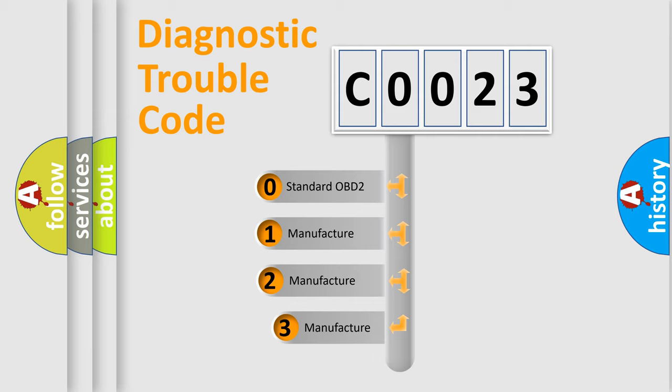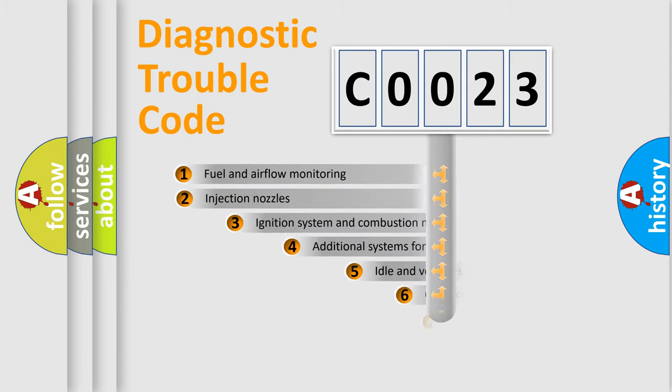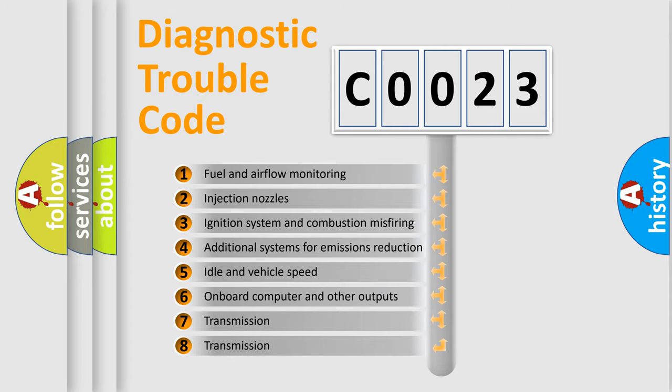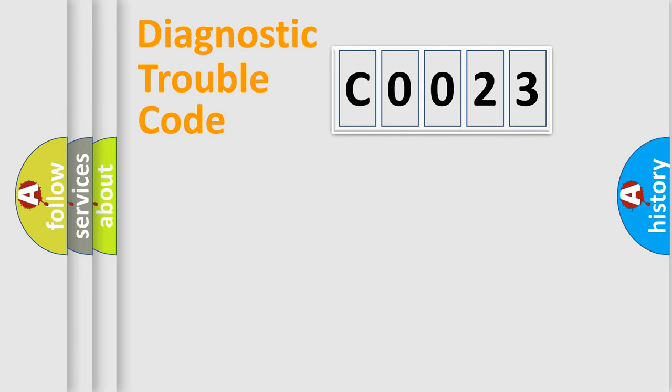If the second character is expressed as zero, it is a standardized error. In the case of numbers 1, 2, 3, it is a car specific error. The third character specifies a subset of errors. The distribution shown is valid only for the standardized DTC code.